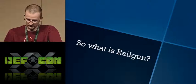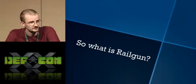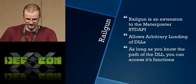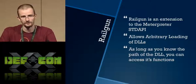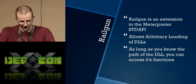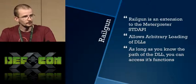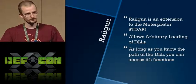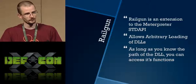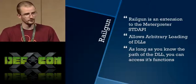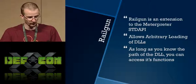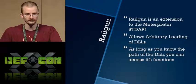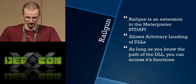Jumping right into Railgun — Railgun is one of the extensions for Meterpreter. Basically it's a part of the standard API that allows for arbitrary loading of DLLs on the system. As long as you know the path of the DLL you're trying to load, you can just pass that information into Railgun. It will map the DLL into memory, and then you can actually get function pointers out of that module. It's doing run-time dynamic linking on the fly — we pass it a DLL name, then some function names, and we get to call that function as if it was already coded directly into Meterpreter.